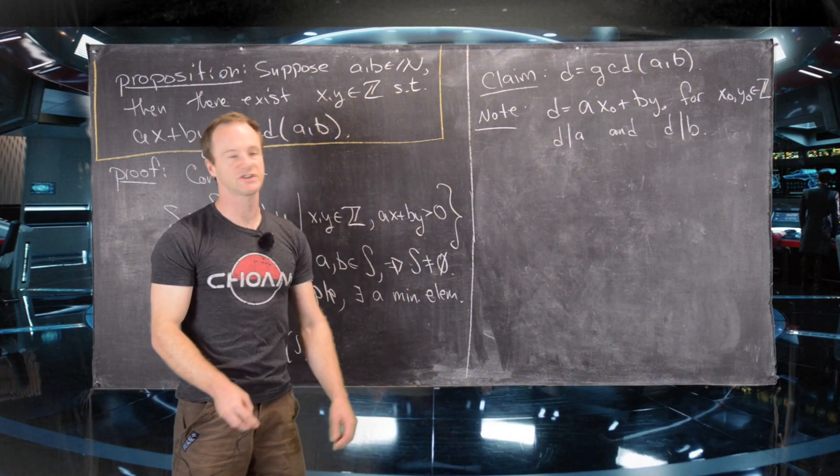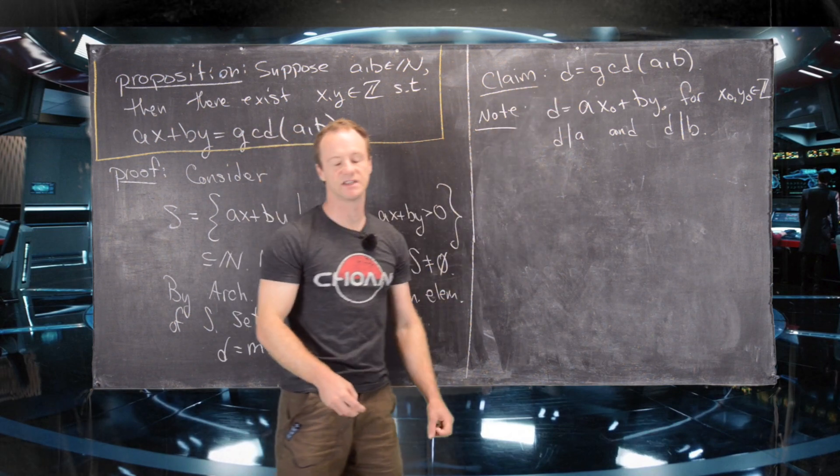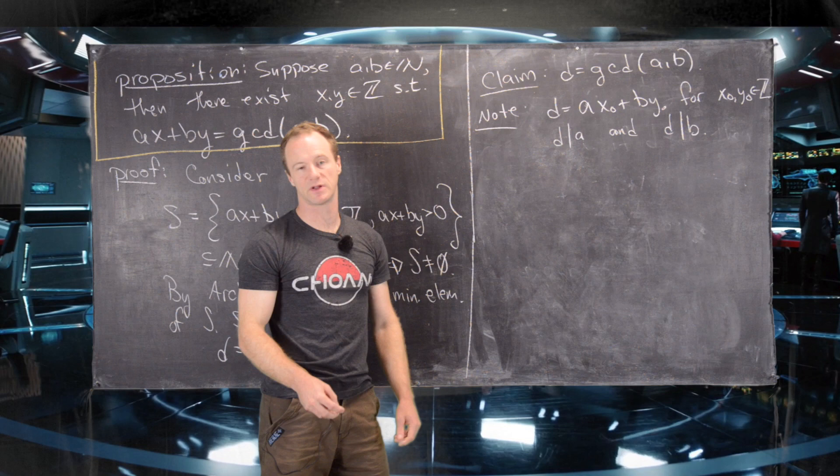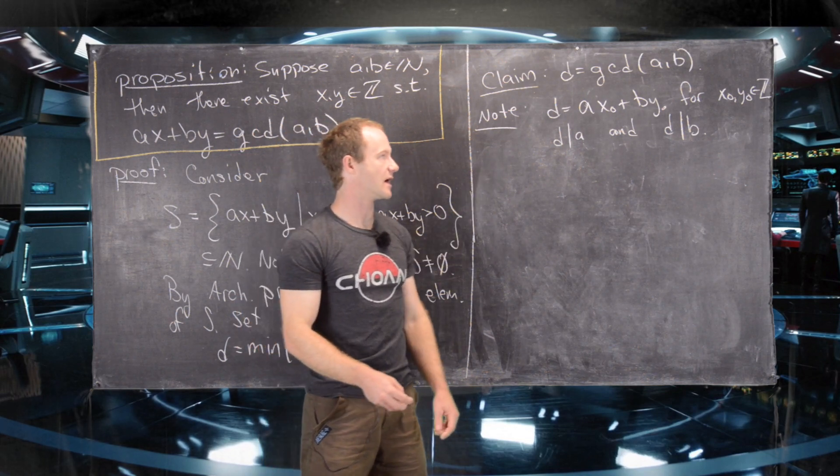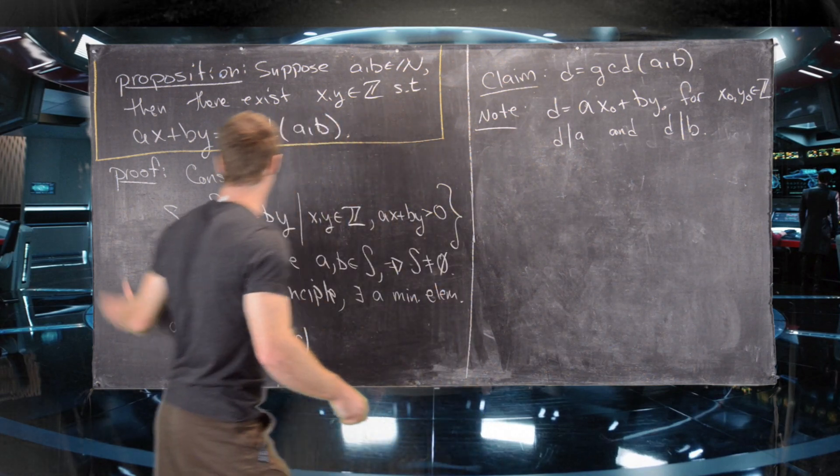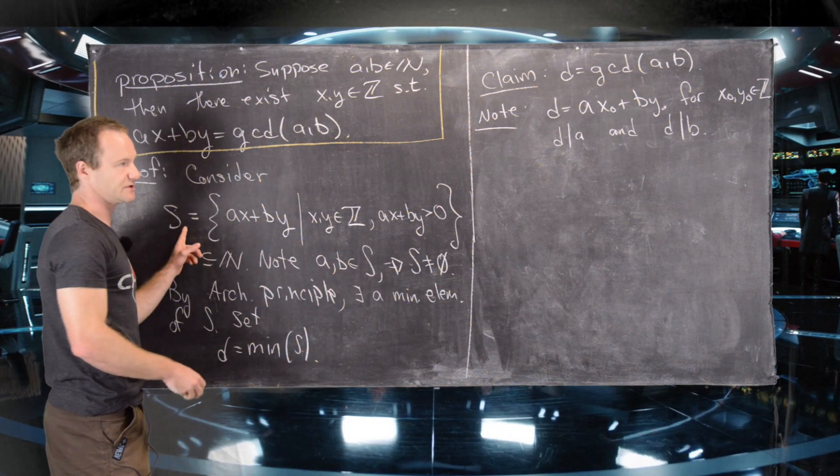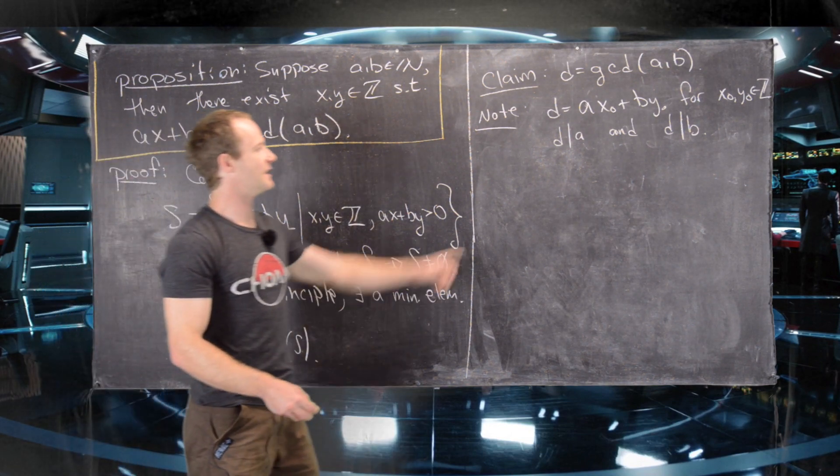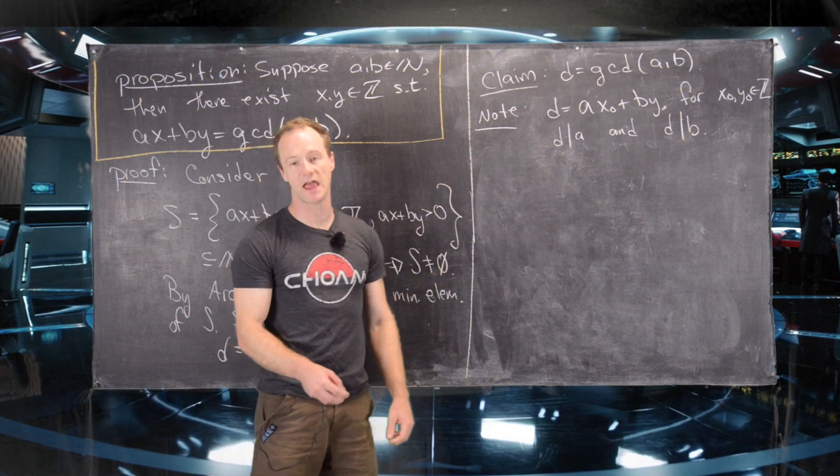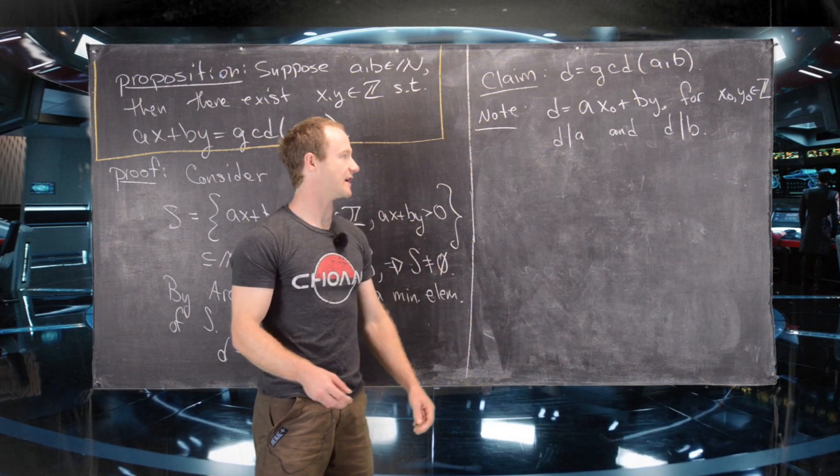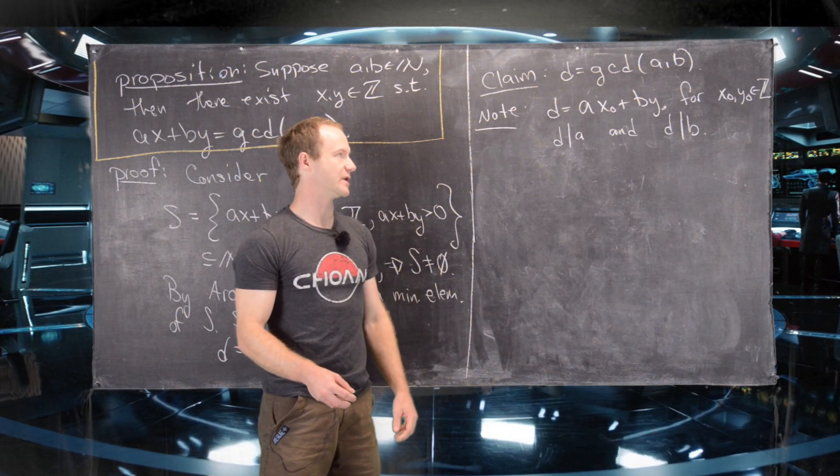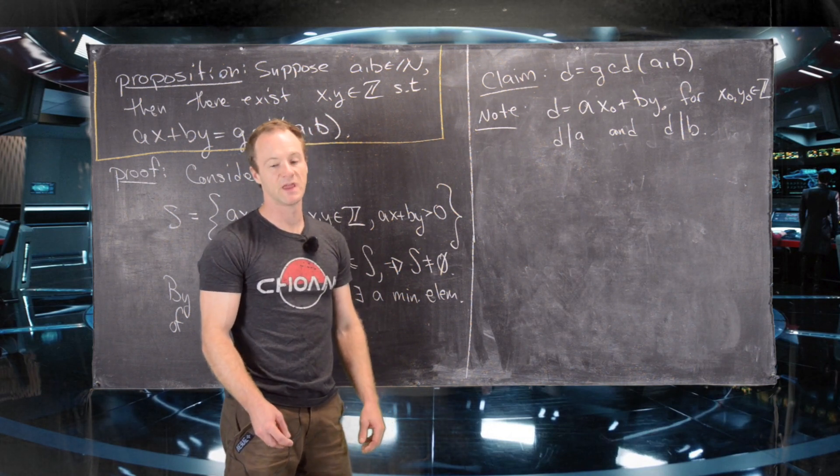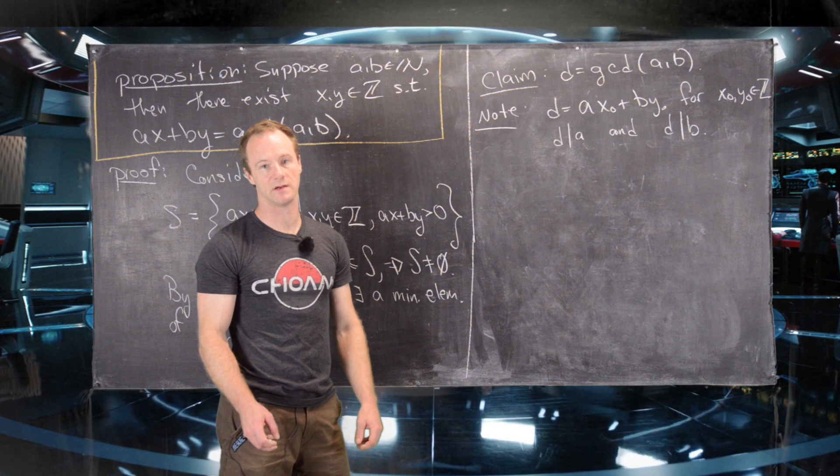So I've erased the board. And just to summarize where we are, we're claiming that D is the GCD of A and B. We said D was equal to AX0 plus BY0, where X0 and Y0 are elements from the integers. And we knew that that had to be the case because we took this from the element S. And this is one of the rules of being inside S. And then we just proved carefully that D divides A. And through exactly analogous proof, we could prove that D divides B. So in other words, D is a common divisor of A and B. And now we want to show that it's the greatest common divisor of A and B.